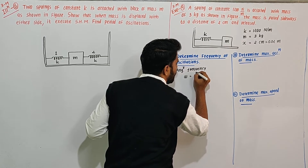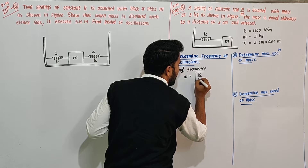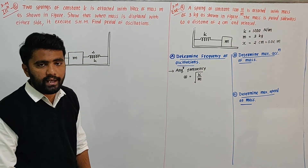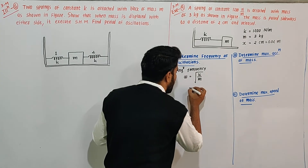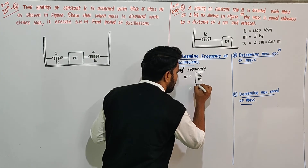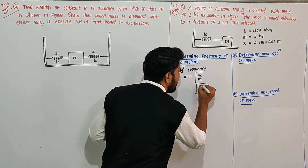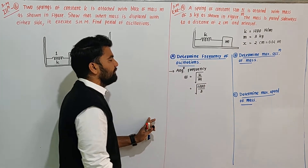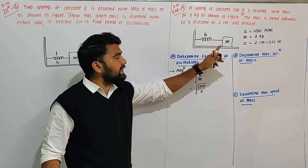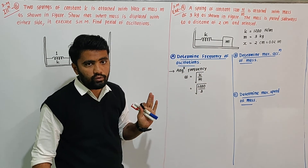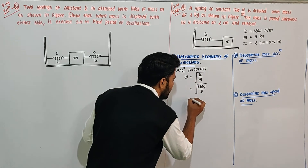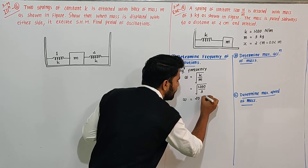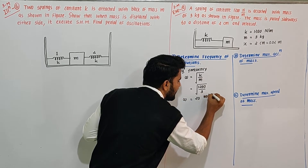So ω = √(K/M). Substituting values: K = 1200, M = 3. So 1200 divided by 3 equals 400. The square root of 400 is 20. So angular frequency ω = 20 radians per second.